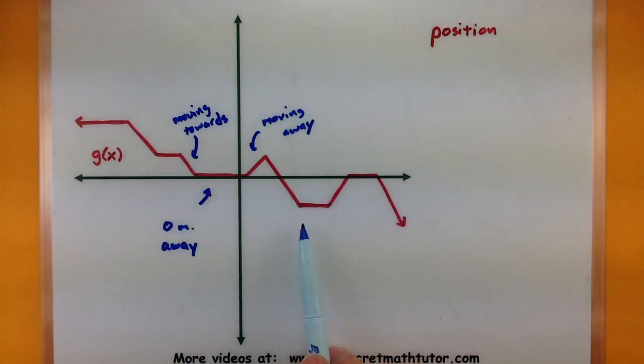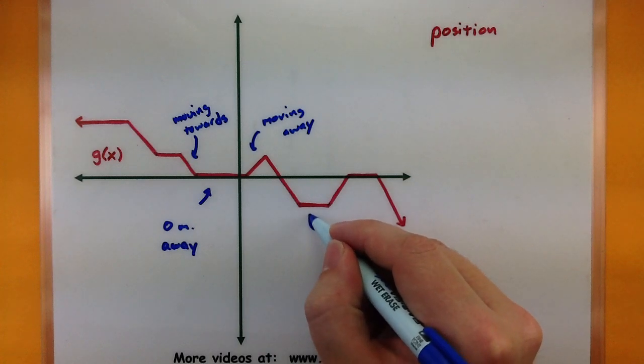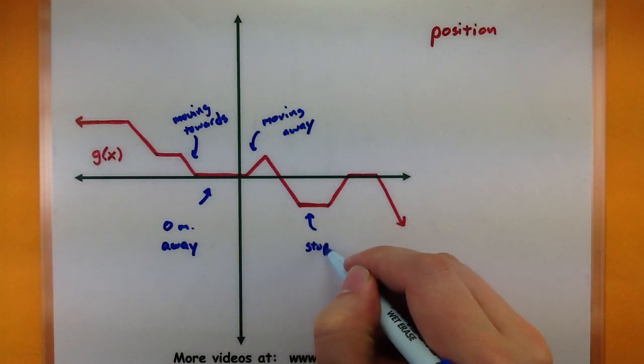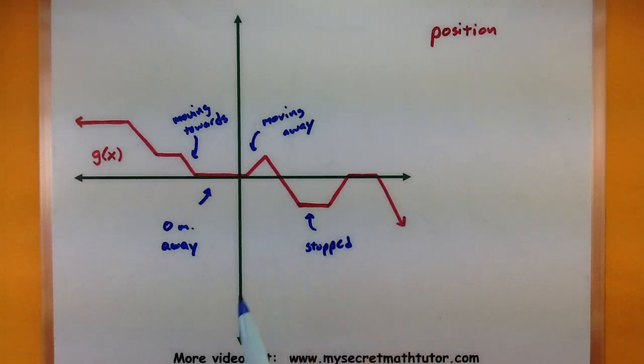Now you'll notice that there's a bunch of different flat spots in here, and those are spots where our distance is not changing whatsoever, so we know that we've essentially stopped. So if this is talking about a jogger and how their morning jog went,